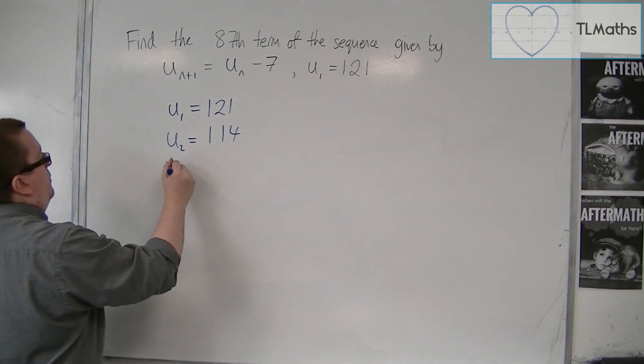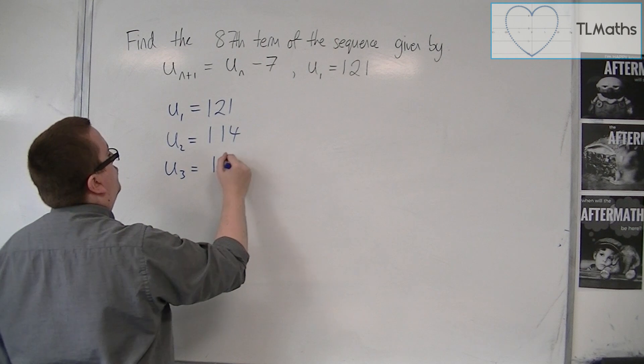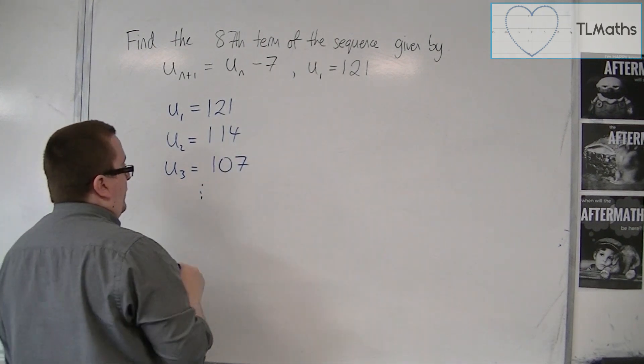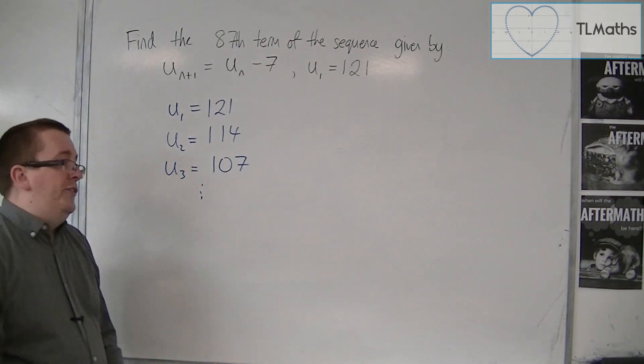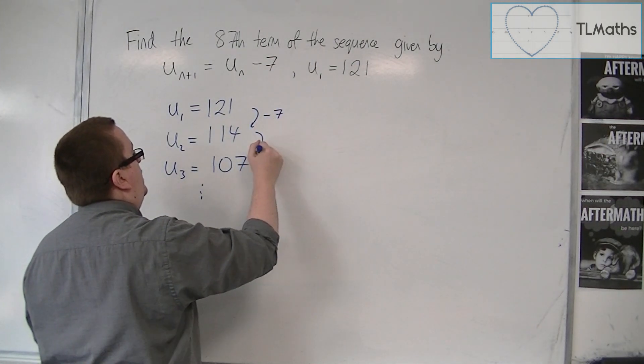And then U_3 would be 114 take away 7, so 107, and so on. What I can see here is that I am subtracting 7 each time.